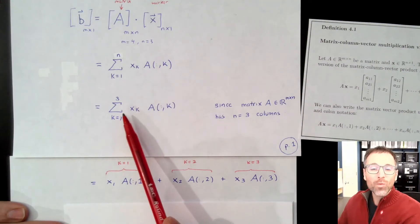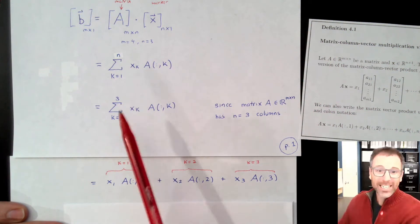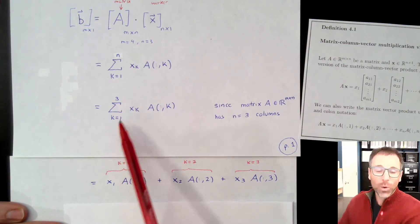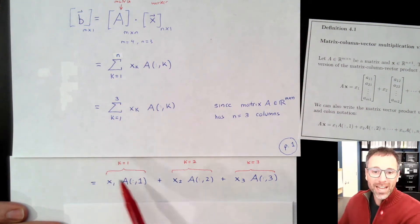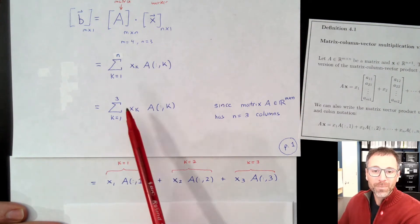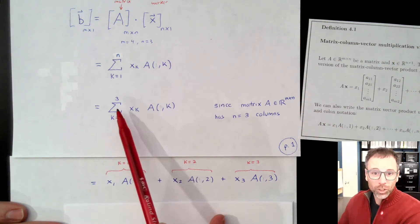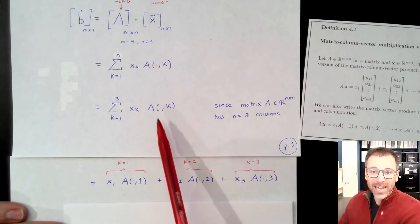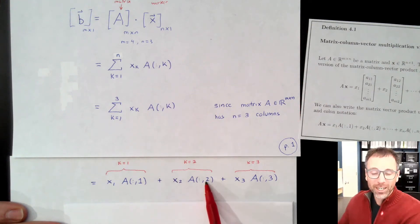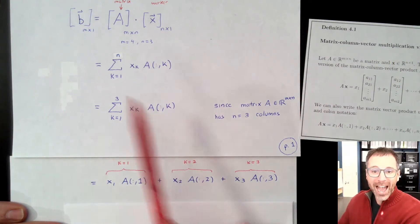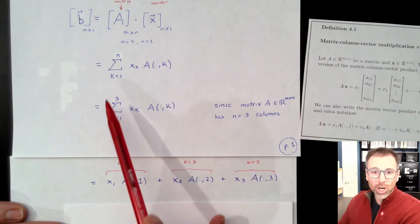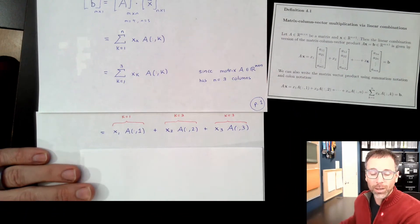And now we can unroll this sum looking at each individual entry. So we'll start at k equal 1. When k is 1, we have x1 times the first column of A. We go next to k equals 2. This is a sum, so we add that. So at k equals 2, this is x2 times the second column of A. And then we add, because this is a sum, x3 times the third column of A, total of 3 columns.